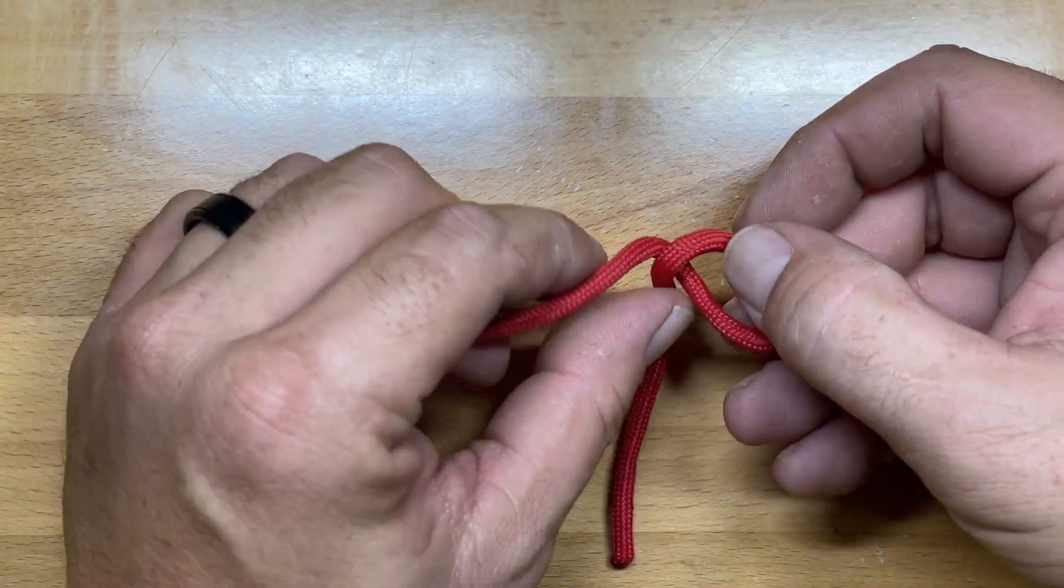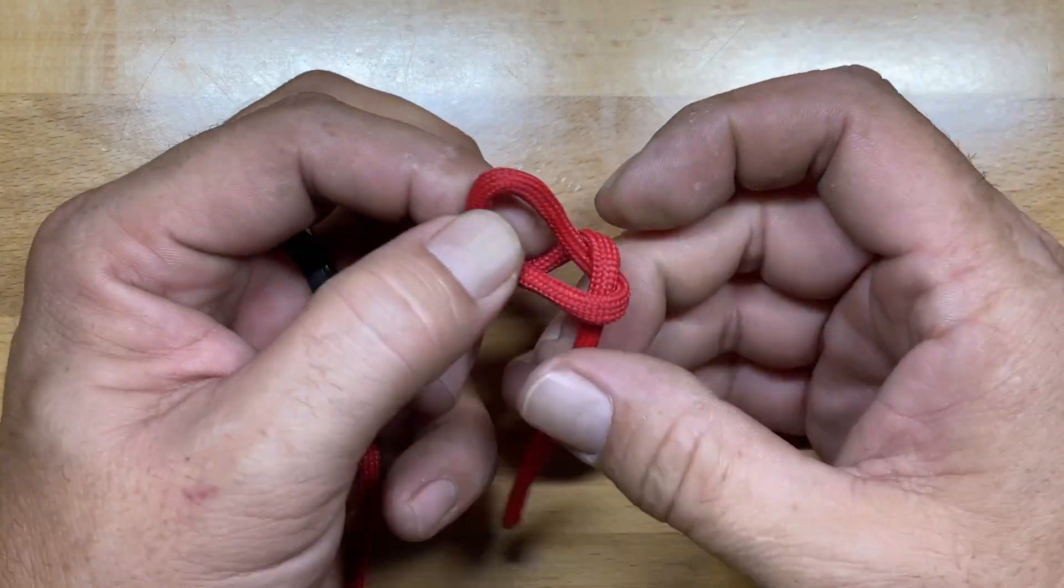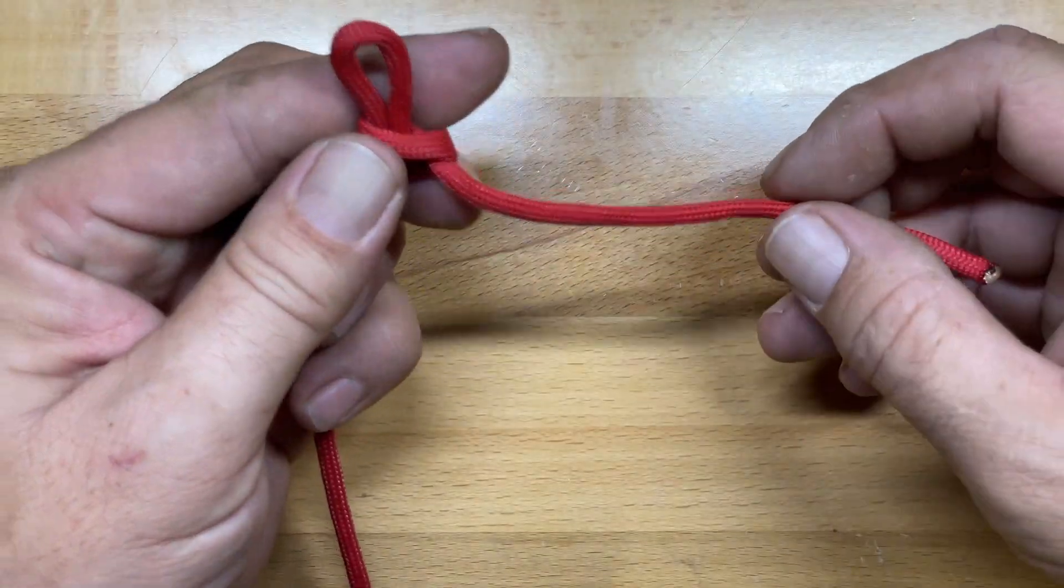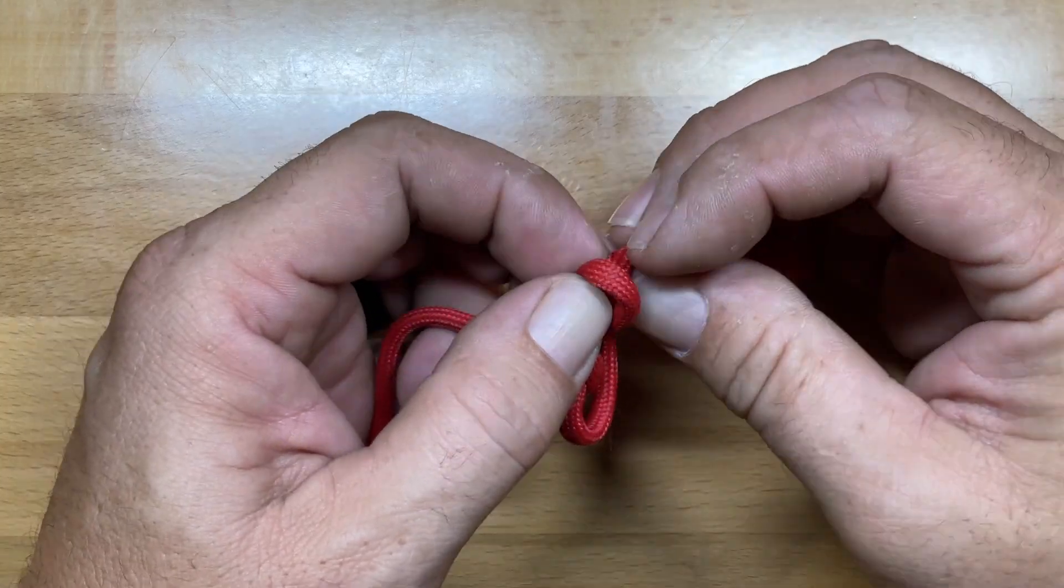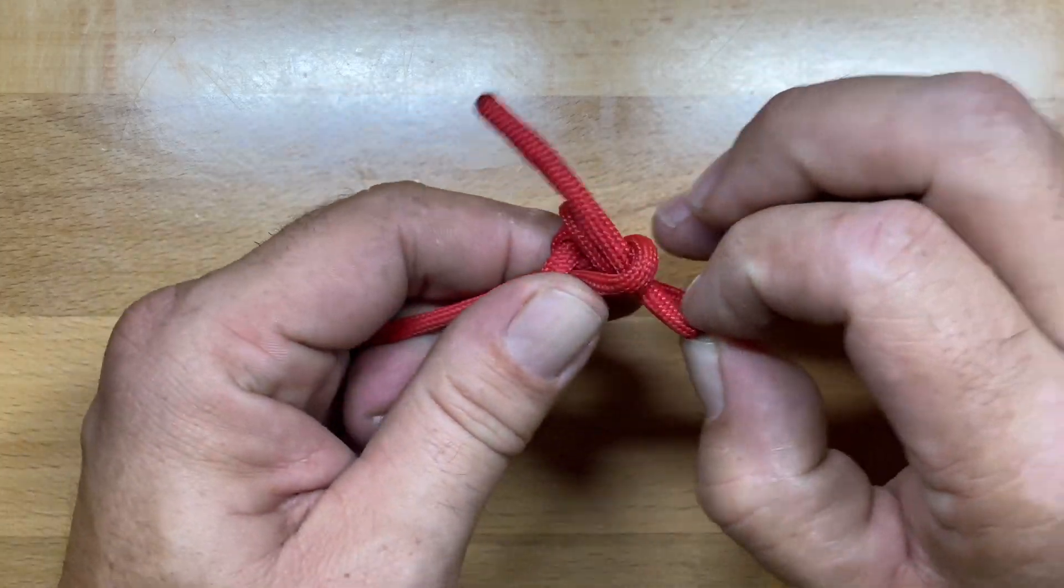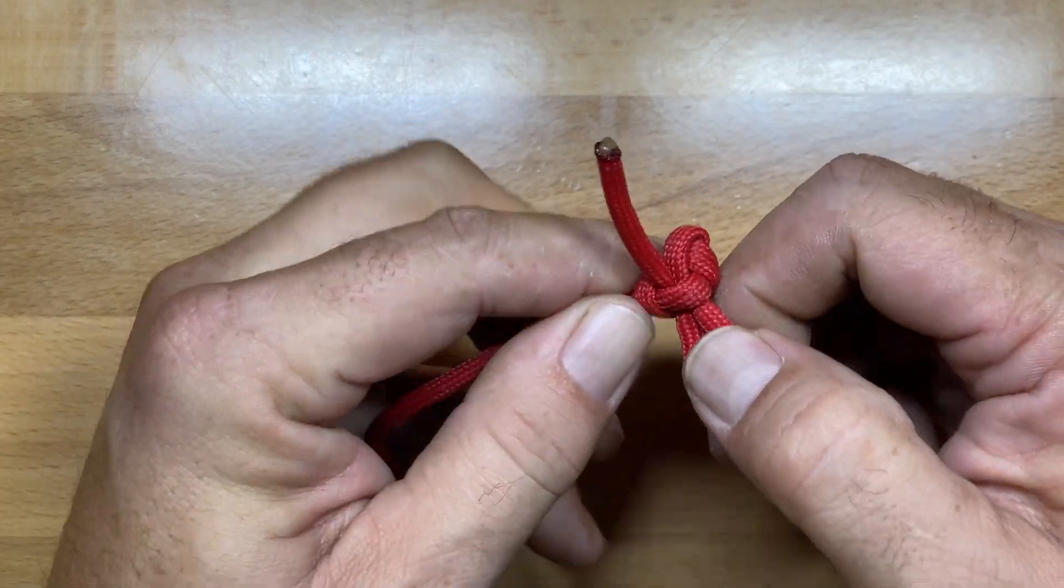So once again, pull a loop, fold it over the standing end, pull a small loop through, snug it, and then send the tail end through that loop, and then tighten the whole thing down.